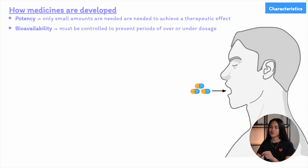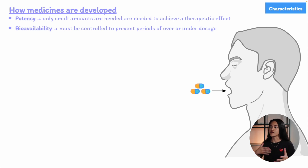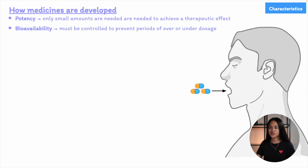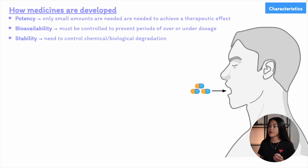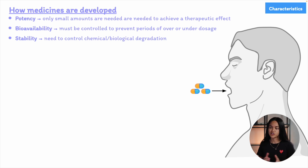The second reason relates to bioavailability and pharmacokinetics — the fraction of the administered drug that reaches the bloodstream unchanged. Many drugs degrade quickly once they enter the body, and it's crucial to control how a drug acts to avoid periods of overdose or underdose. The third reason is stability: many drugs undergo chemical or biological degradation over time, even at room temperature, so minimizing this degradation is important. For these three reasons — potency, bioavailability, and stability — drugs are not provided as pure chemicals.